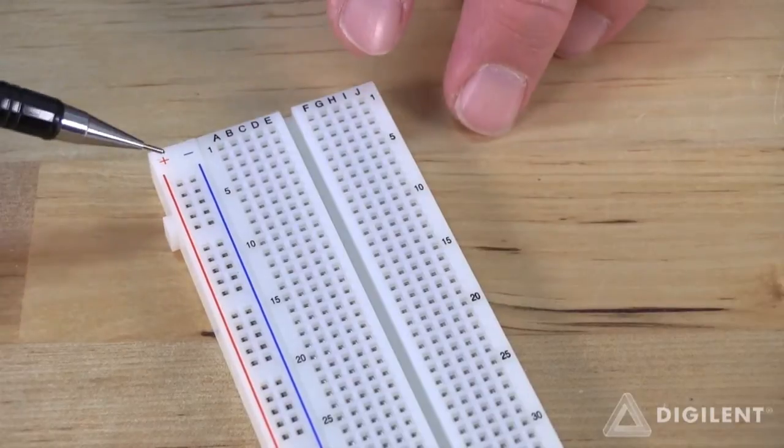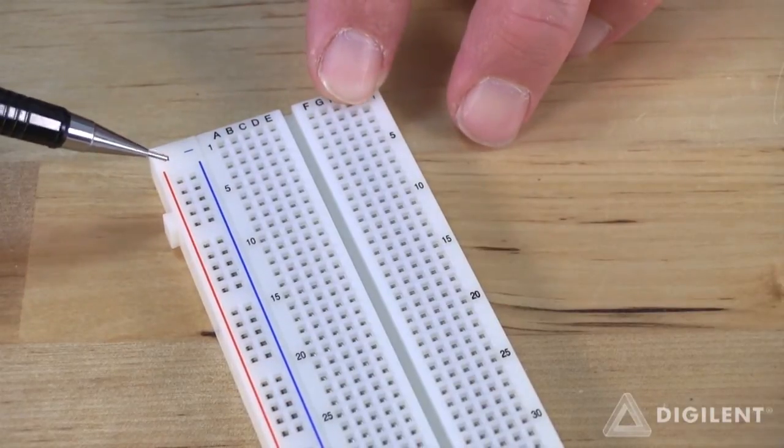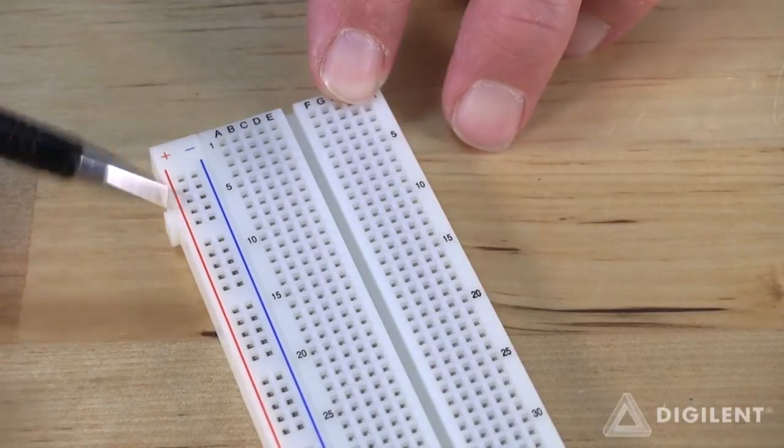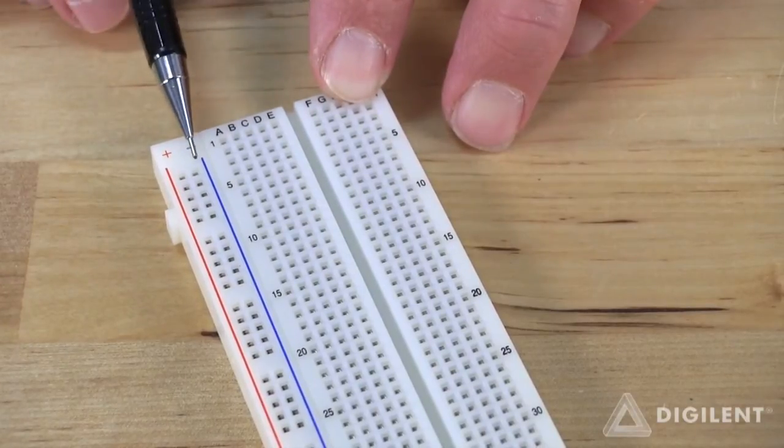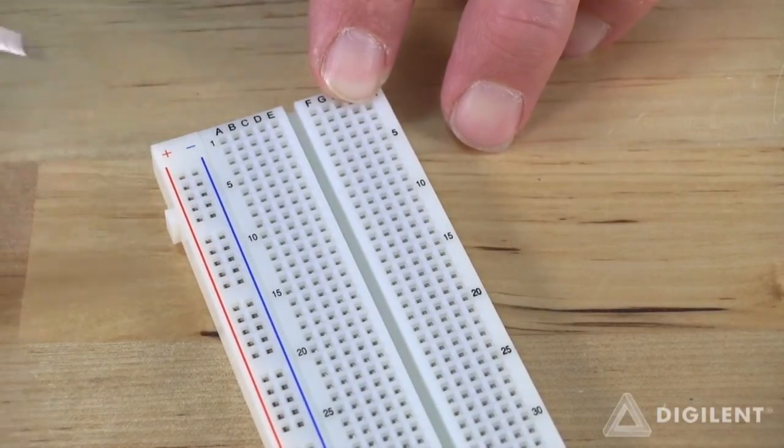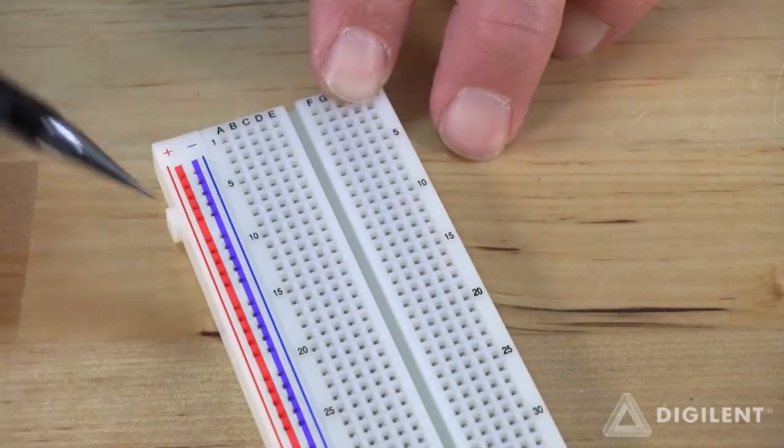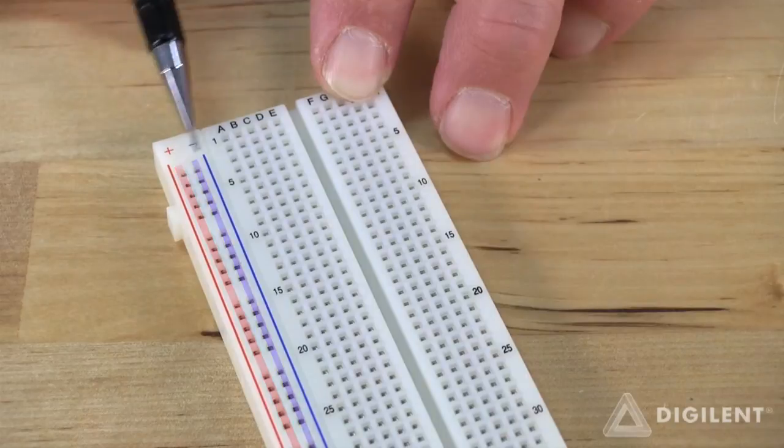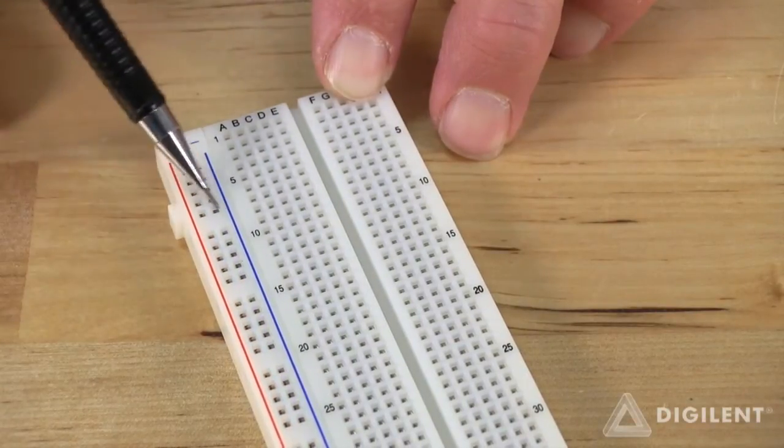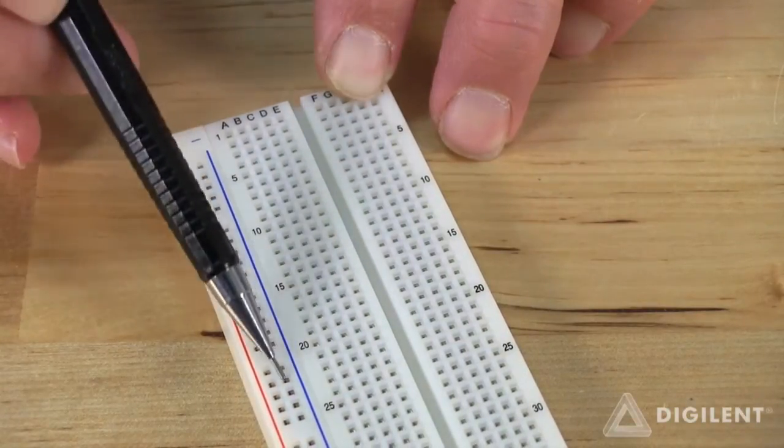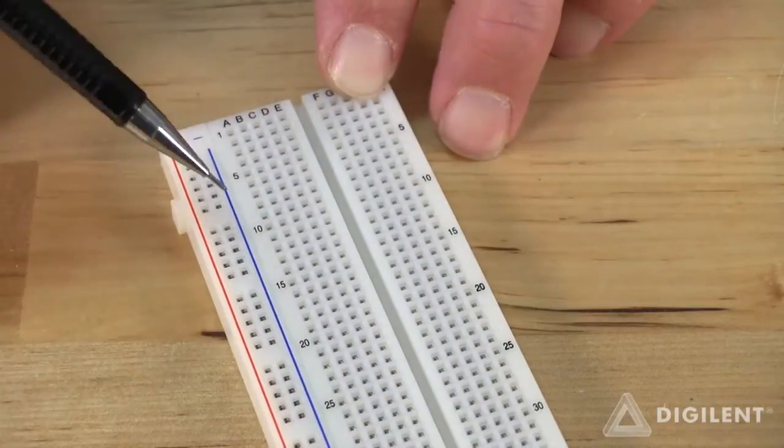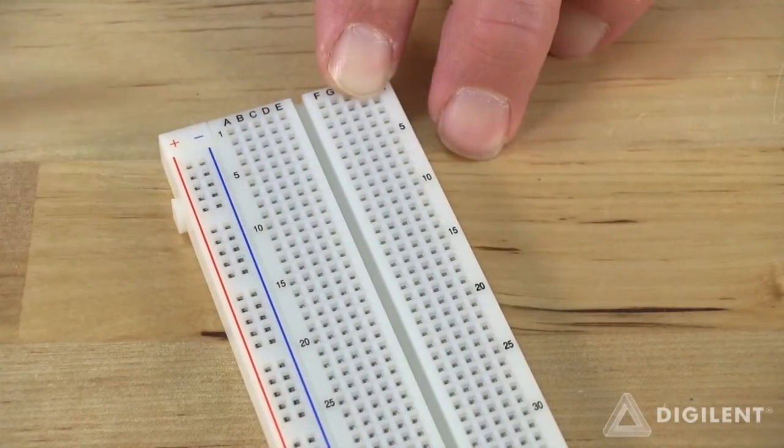Many breadboards have what are called bus strips running along the entire length of the breadboard. Each bus strip will generally have either a blue line or red line next to it. All the holes in each bus strip are electrically connected. The two bus strips are isolated from one another though. These strips make it easy to make connections at multiple locations in your breadboard. This is generally used mostly in larger circuits.